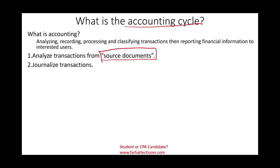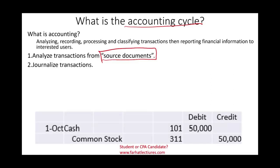Next, what we do is journalize it in the accounting record. Journalizing means recording it in the form of a debit and credit in the accounting system. Simply put, we debit cash fifty thousand and credit common stock fifty thousand. This is what we mean by journalizing, and you should be very familiar with this process as an accounting student, CPA candidate, or CMA candidate.